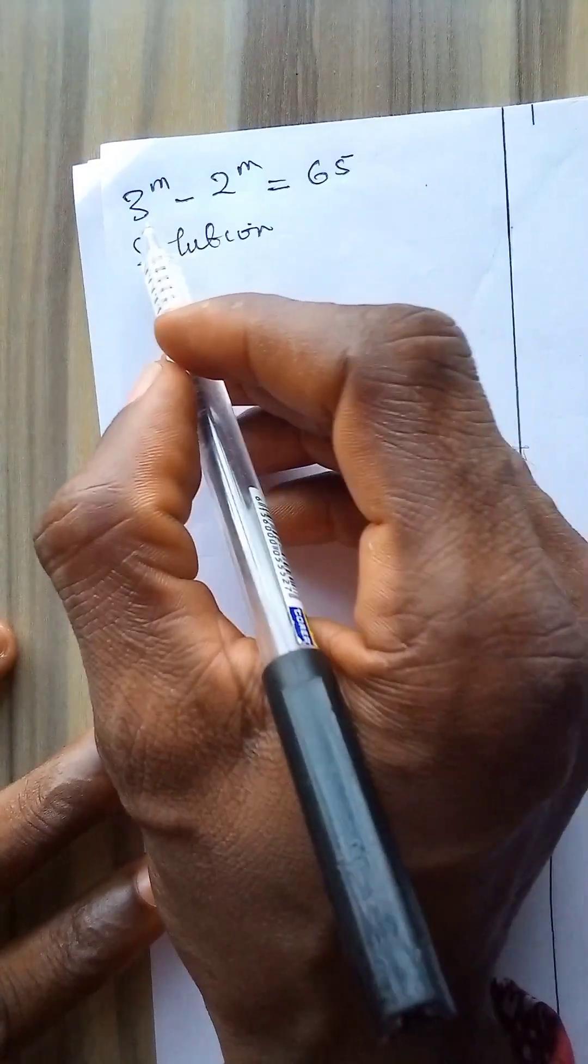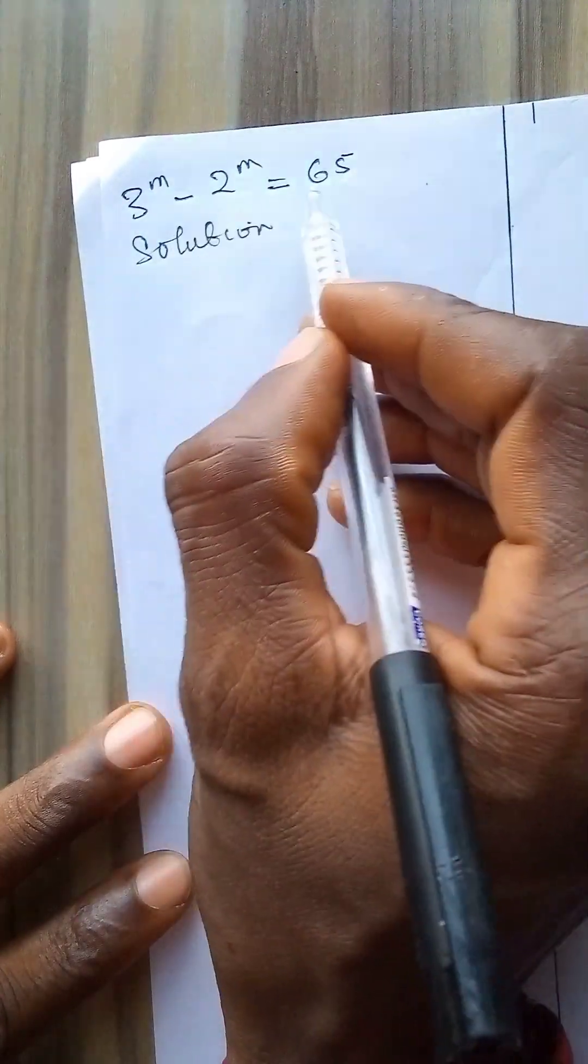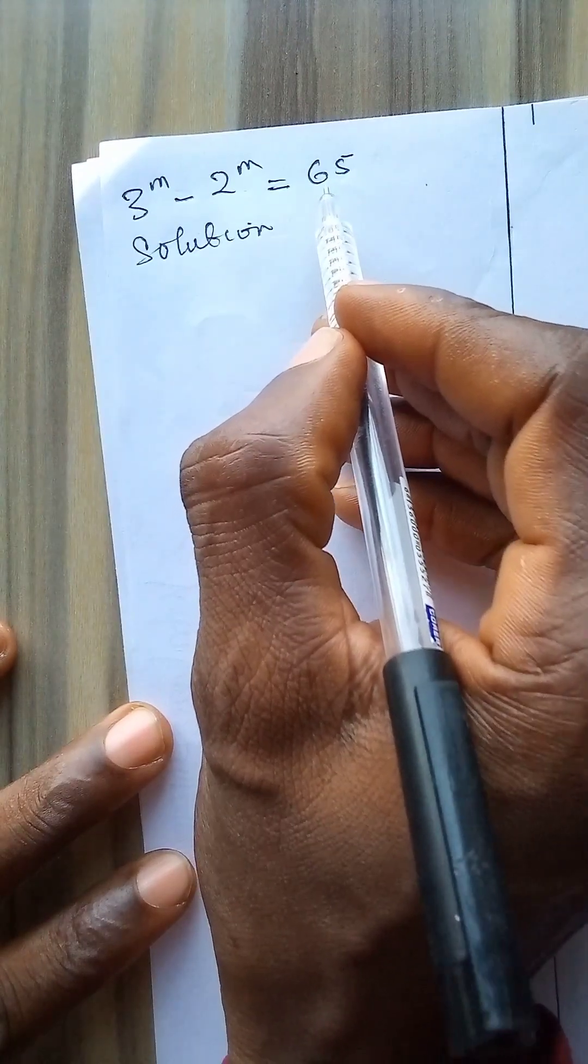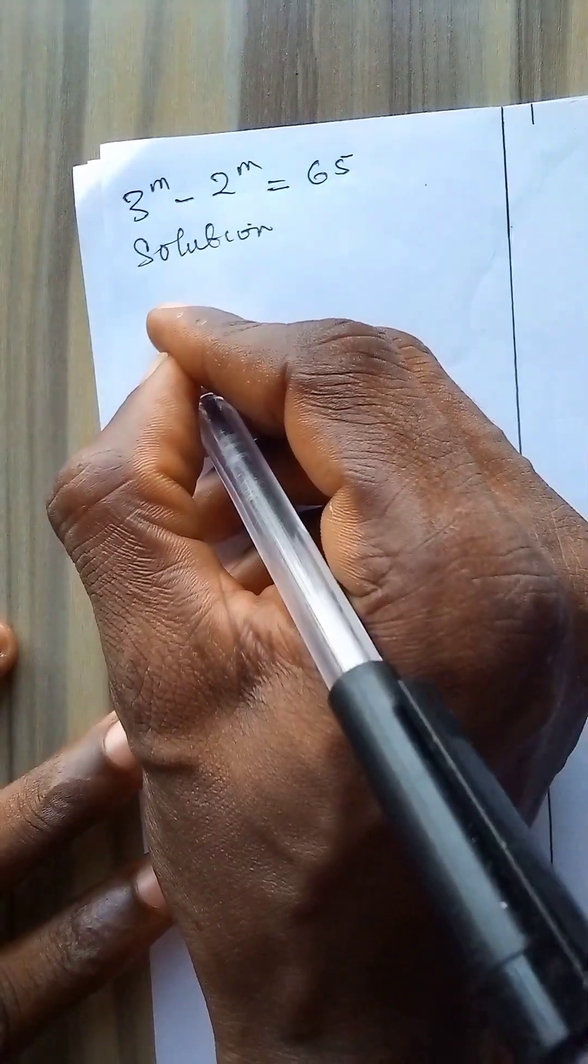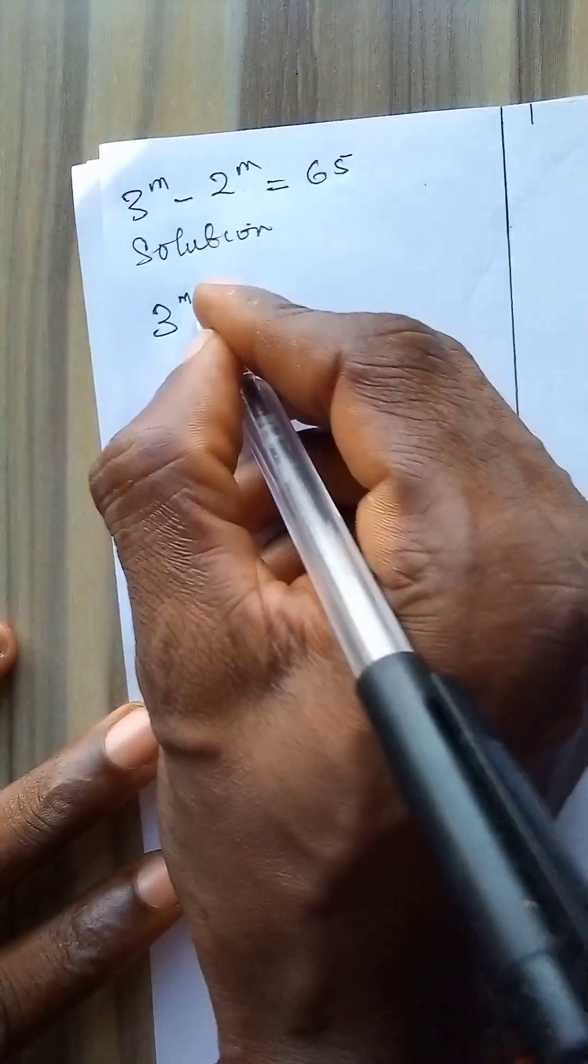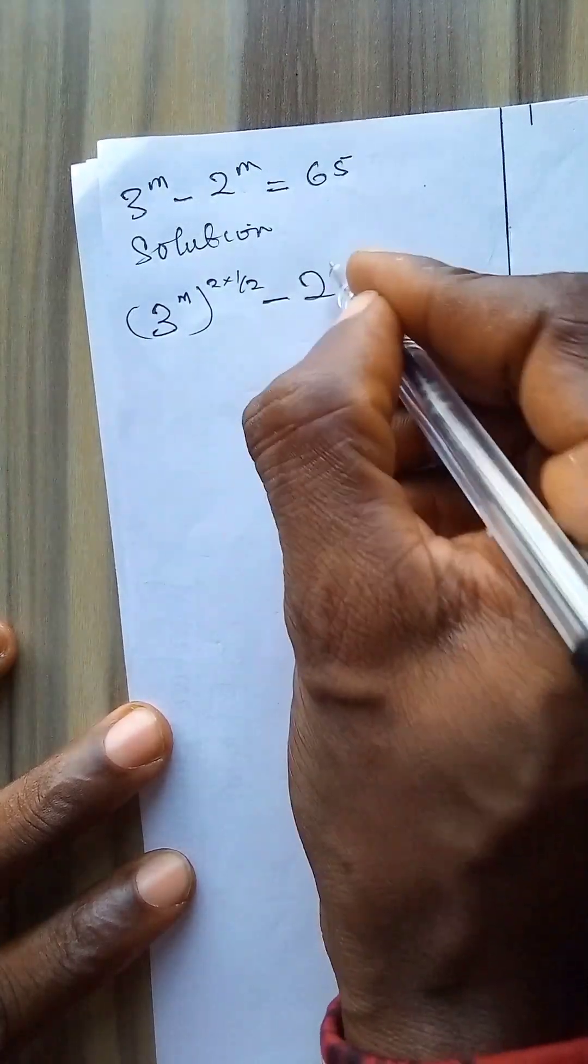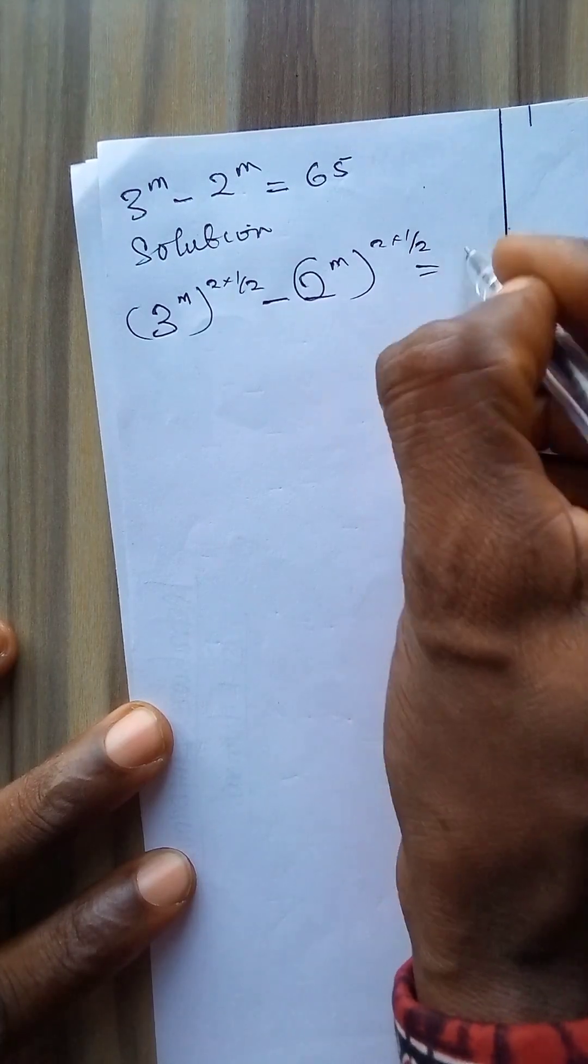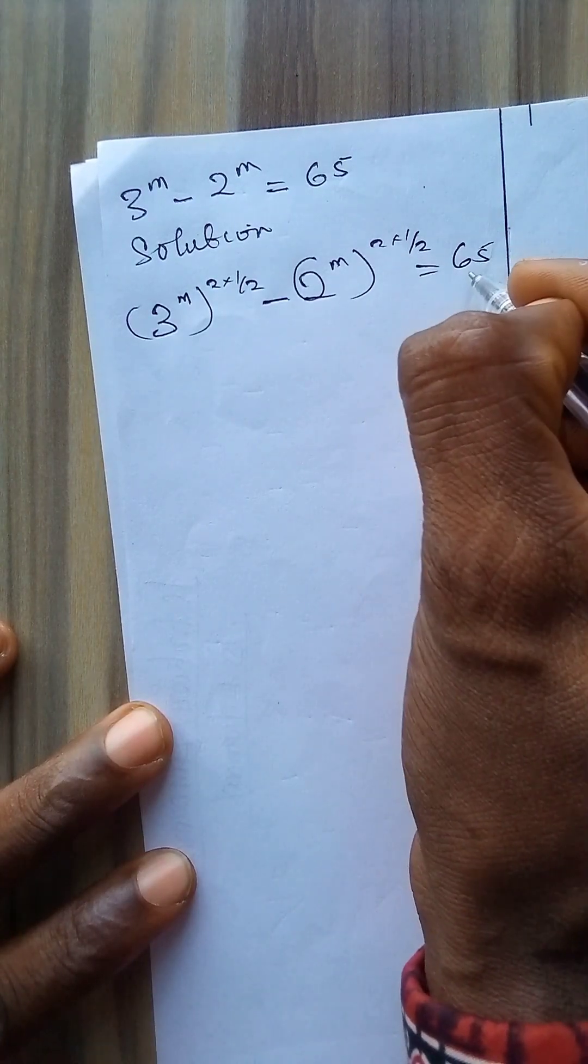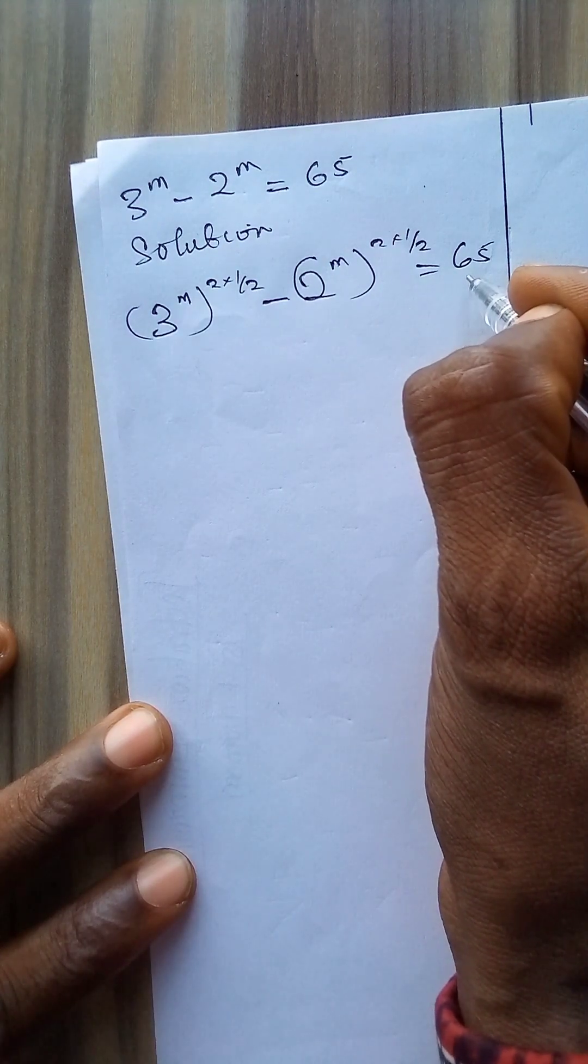Now to proceed I need to manipulate the left hand side of the equation without manipulating the right hand side, and to do that I will do this: 3 to power m times 2 times 1 over 2 minus 2 to power m times 2 times 1 over 2 is equal to 65. It is necessary that I don't manipulate this term on the right hand side.